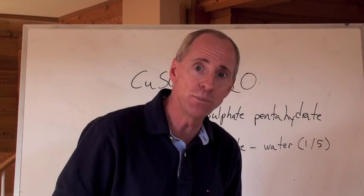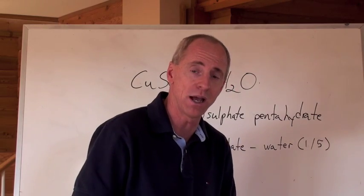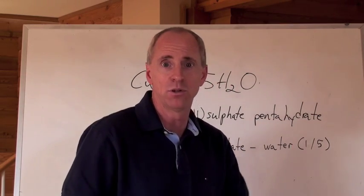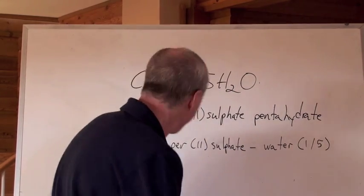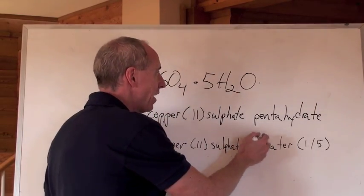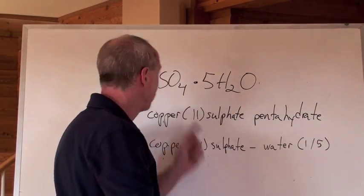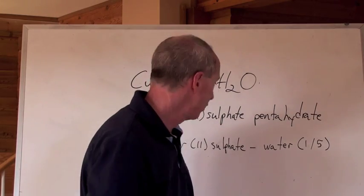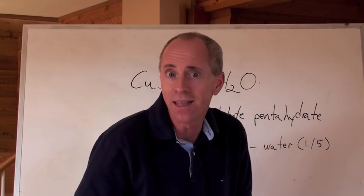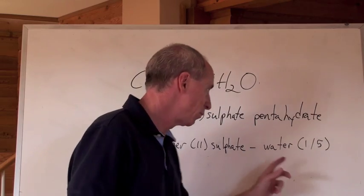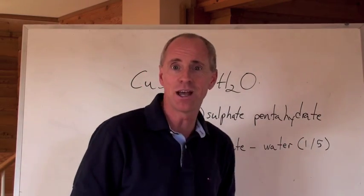But now the new system for IUPAC, the International Union of Applied People Who Do Chemistry, uses copper(II) sulfate-water, and then a 1 to 5 ratio. So you just say copper(II) sulfate-water (1/5). That's another way of naming it. Most people don't use that one, and they'll use the pentahydrate one.